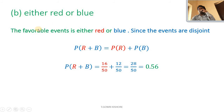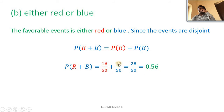Part B — either red or blue: the favorable event is either red or blue. Since the events are disjoint, probability of R or B equals probability of R plus probability of B, that is 16 by 50 plus 12 by 50, giving 28 by 50, equal to 0.56.